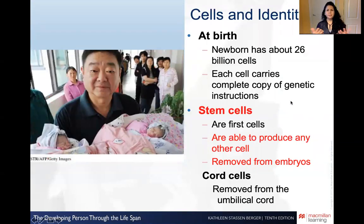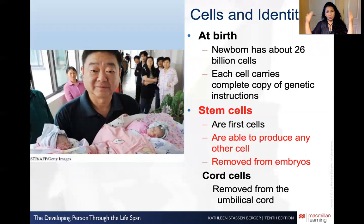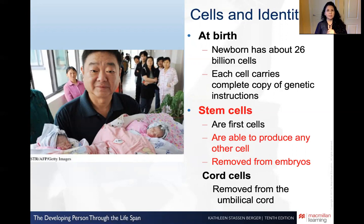At birth, newborns have billions of cells — you have just created life. What are stem cells? Stem cells are the first cells in a newborn child — the first cells of life. Those first beginning cells are fresh and new, before environmental toxins or other things can harm our cells as we age. These are stem cells, and they are amazing because stem cells are able to produce any other cell in the body. Stem cells could basically rebuild something.